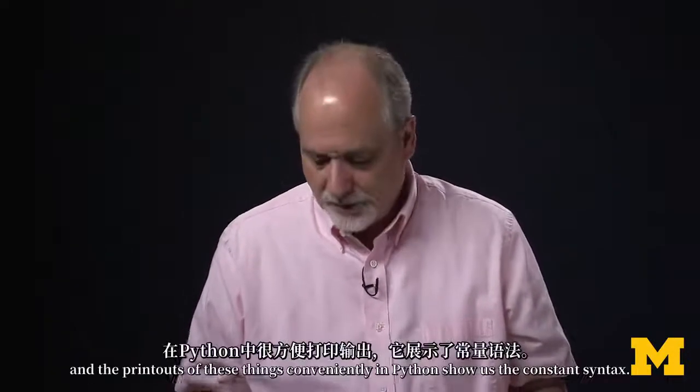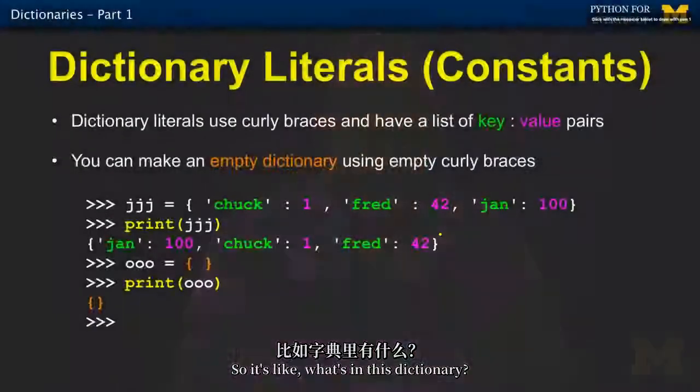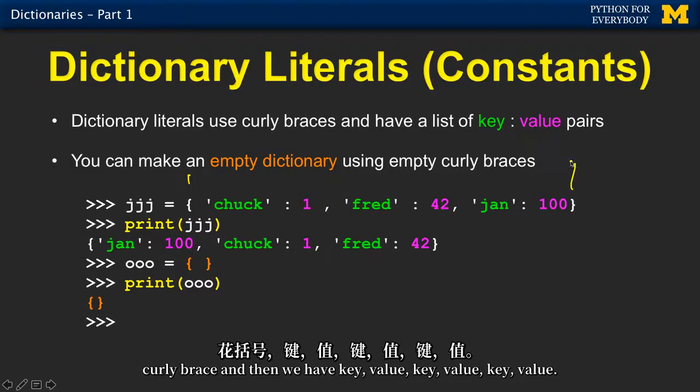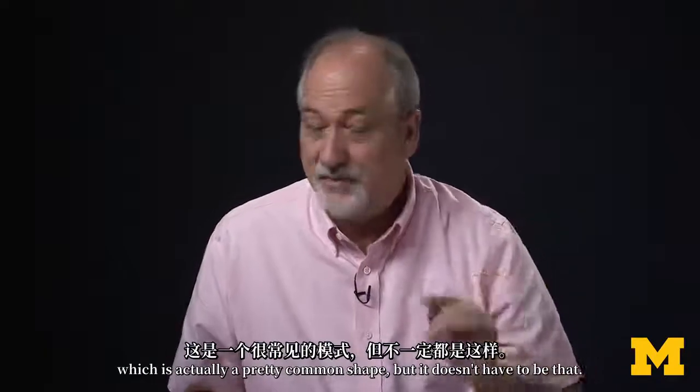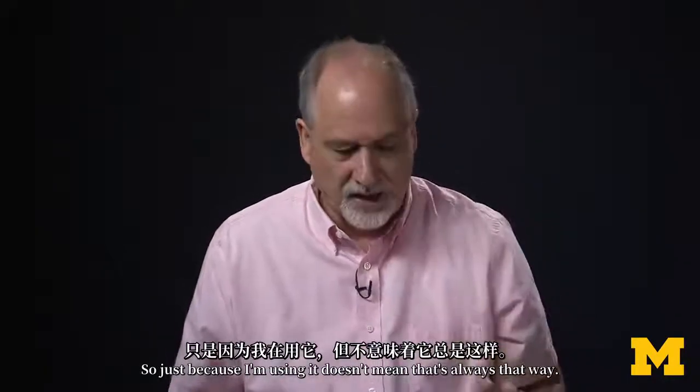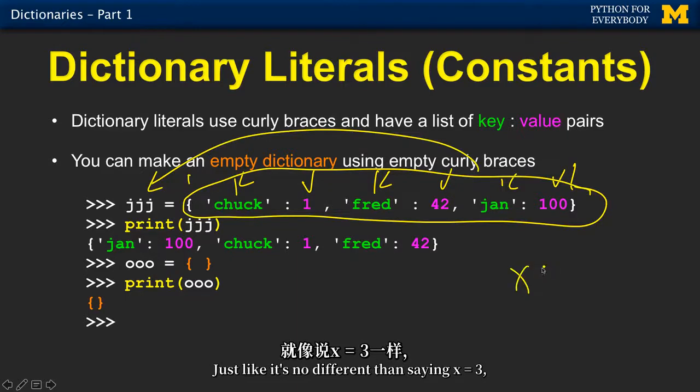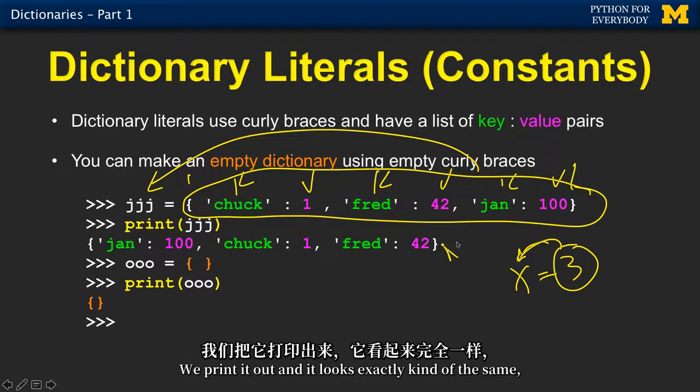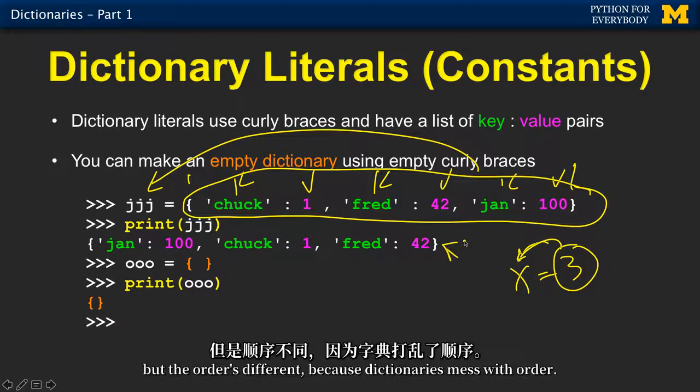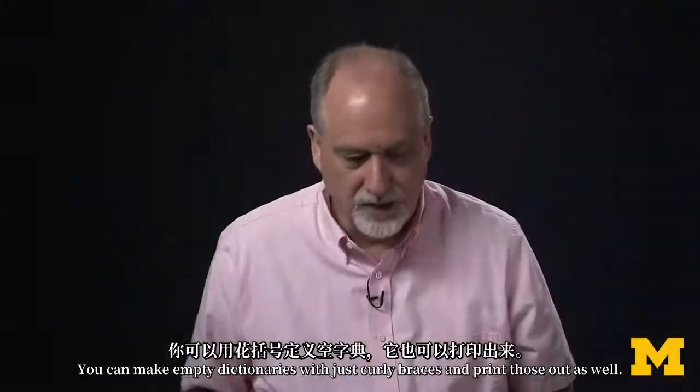We can make constants. And the printouts of these things conveniently in Python show us the constant syntax. So it's like, what's in this dictionary? So we start with a curly brace for a constant, curly brace. And then we have key value, key value, key value. Now, I have been using strings for keys and numbers for values, which is actually a pretty common shape, but doesn't have to be that. So just because I'm using it doesn't mean that's always that way. So this creates a dictionary constant, and then that gets assigned in the jjj variable. Just like it's no different than saying x equals three, this is an integer constant that gets assigned into x. We print it out and it looks exactly kind of the same, but the order is different because dictionaries mess with the order. You can make empty dictionaries with just curly braces and print those out as well.